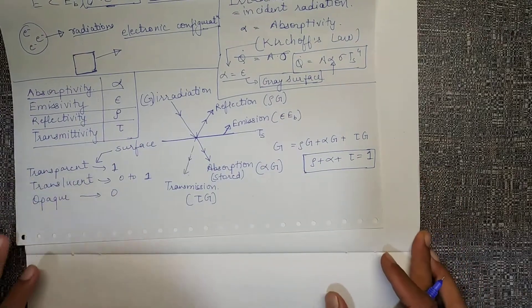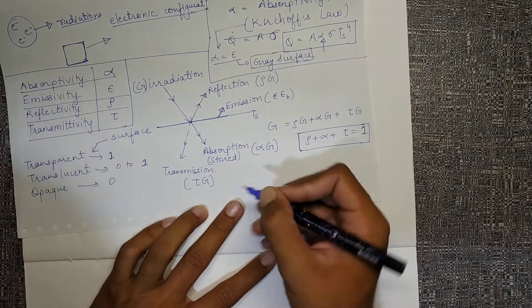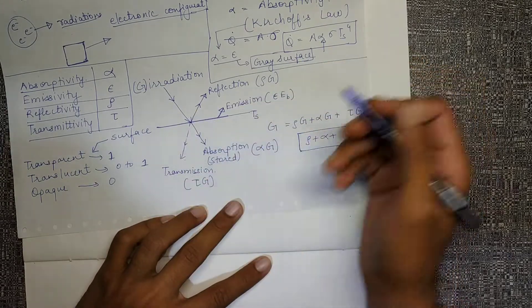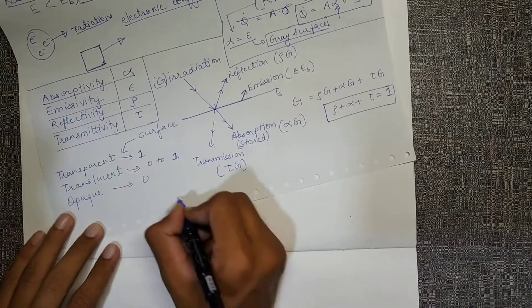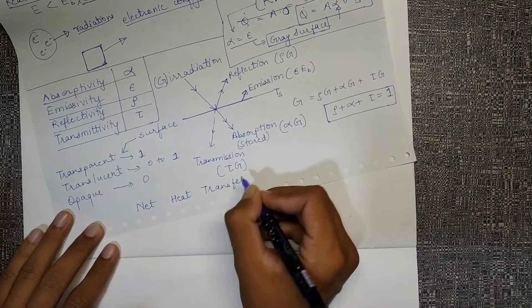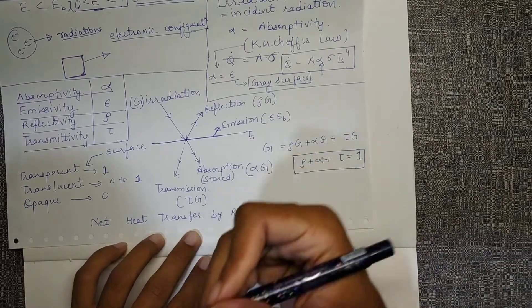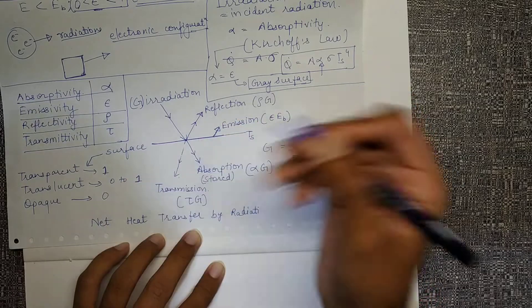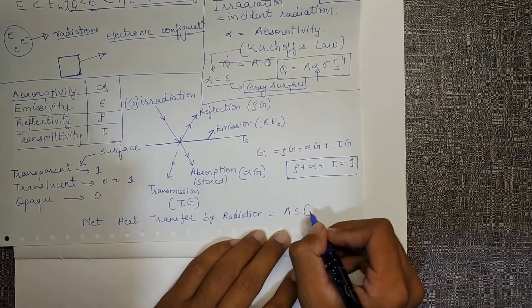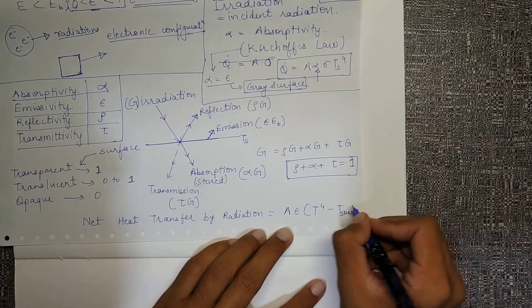After all this, we can have some energy which is coming to the body, some energy which the body is emitting. That means the net heat transfer by all radiations, whatever incident and whatever emission, all accounted for. So A into epsilon sigma into T surface raised to 4 minus T surrounding raised to 4.